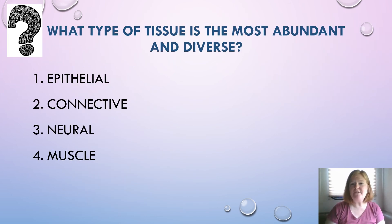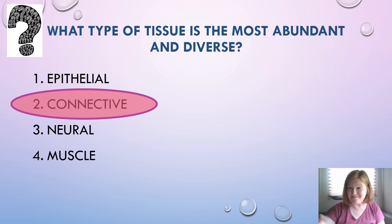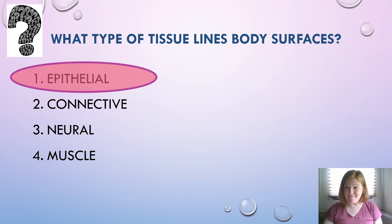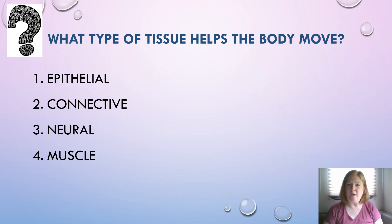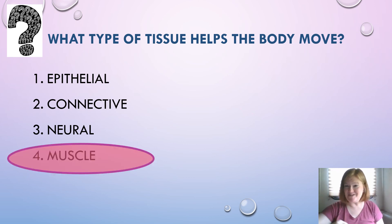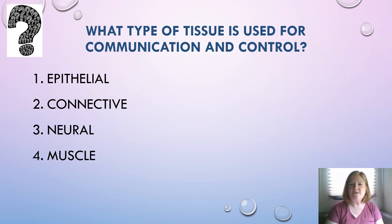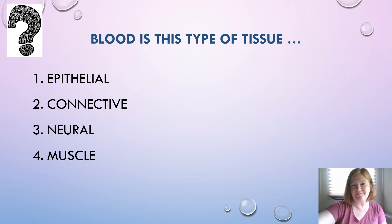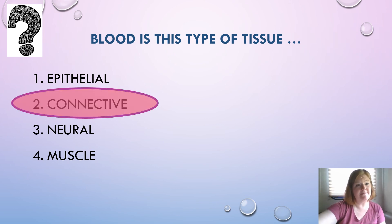Let's go over some questions. What type of tissue is the most abundant and diverse? Connective tissue. What type of tissue lines body surfaces, internal and external? Epithelial. What type of tissue helps the body move? Muscle tissue. What type of tissue is used for communication and control? Neural tissue. Blood is what type of tissue? Connective tissue.